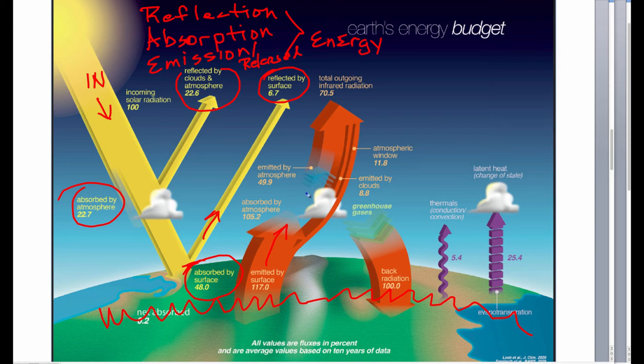Some of that energy that's released makes it all the way out into space where it came from. Now, some of that energy, however, is absorbed by greenhouse gases in the atmosphere and held in or actually released into the atmosphere back down toward the ground. Some into the atmosphere out toward space.